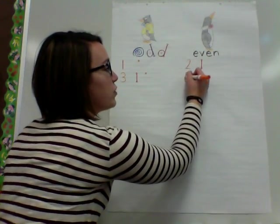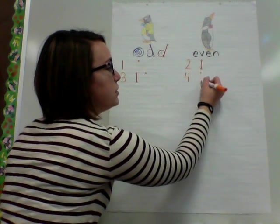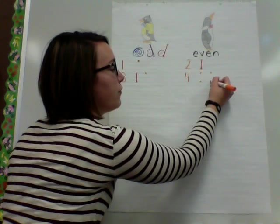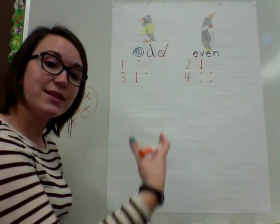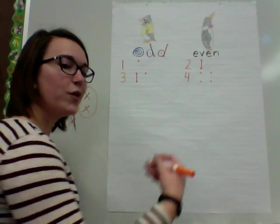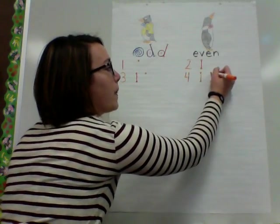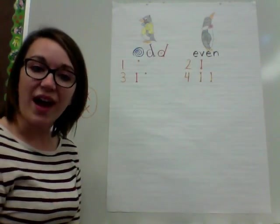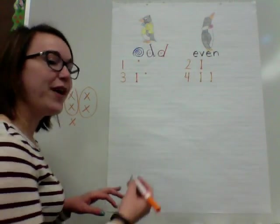Let's move over and do four. We're going to draw one, two, three, four dots, and every time we have two dots that are one on top and one on bottom, we're going to connect those dots. On the number four, it's even because there are no dots left over.